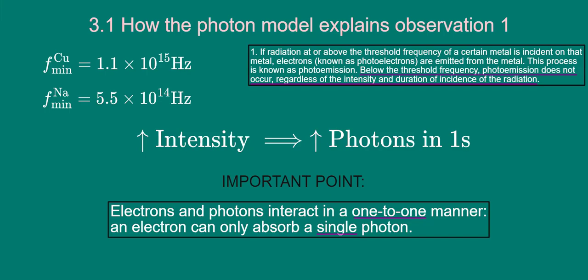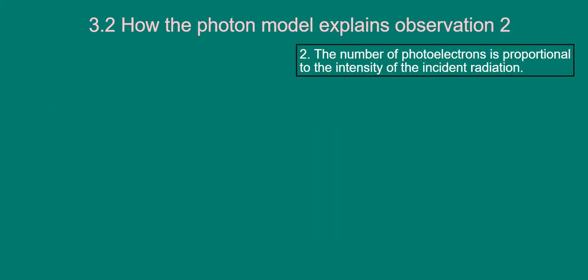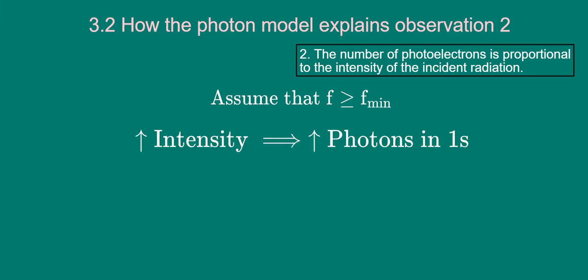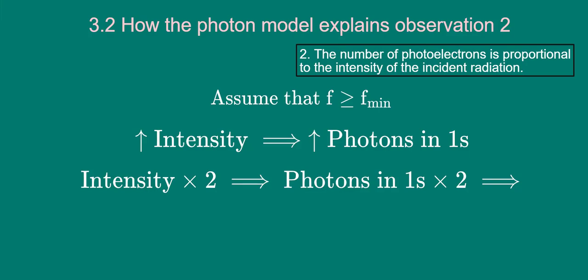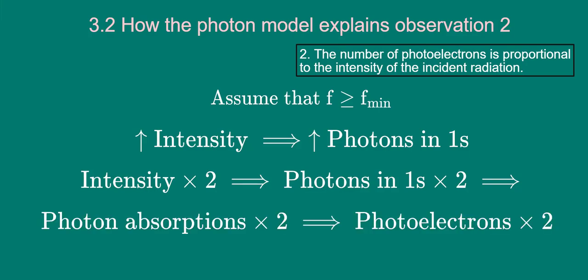Let's now turn our attention to the second observation. While wave theory can account for this, the photon model offers a very simple explanation. Let's assume the light's frequency is at or above the threshold. As mentioned previously, increasing intensity results in proportionally more photons arriving per second onto the metal surface. For instance, doubling intensity means twice as many photons arriving per second. This would result in twice as many electrons absorbing incoming photons, and thus a doubling in the number of electrons being liberated. In other words, the number of photoelectrons is proportional to the intensity of the light.